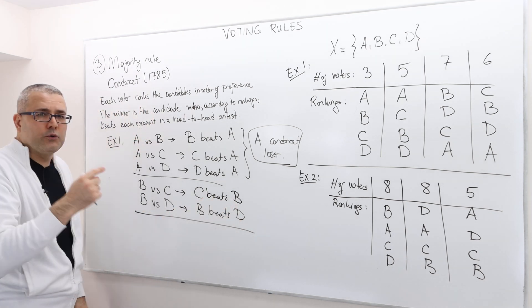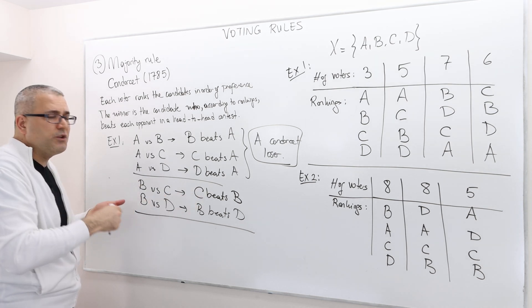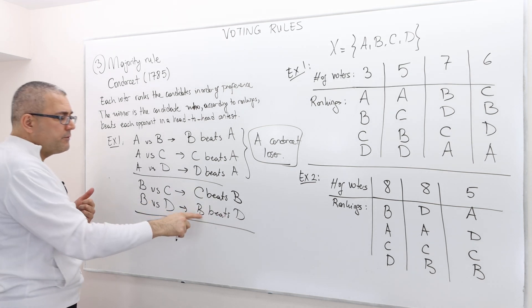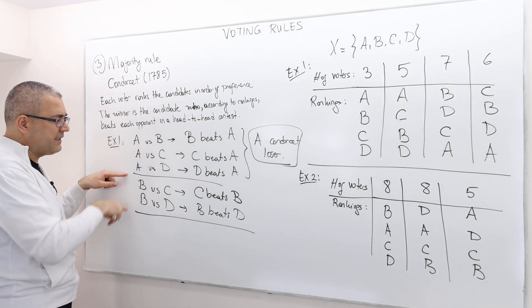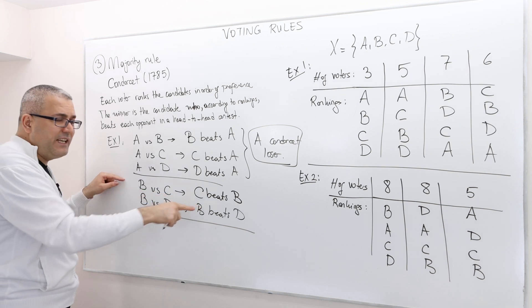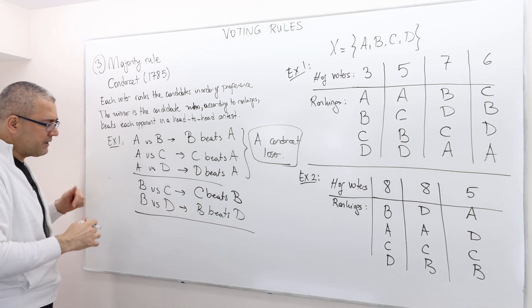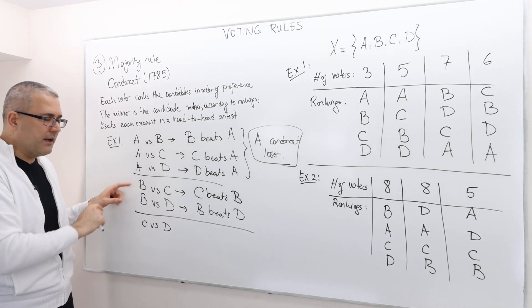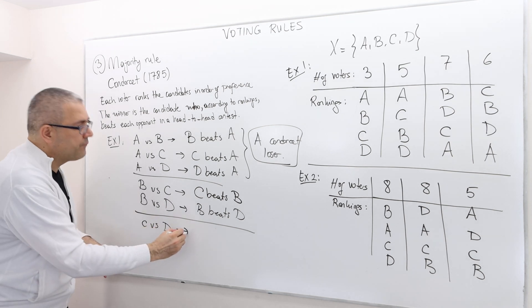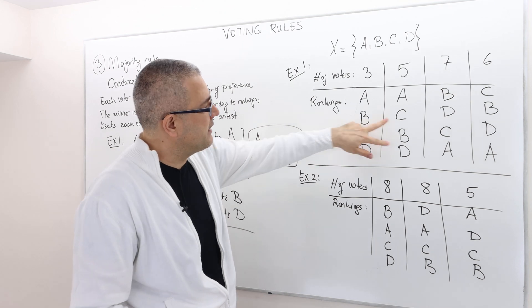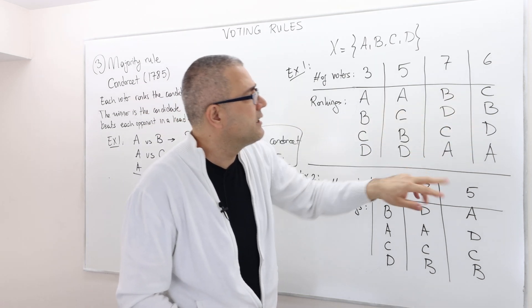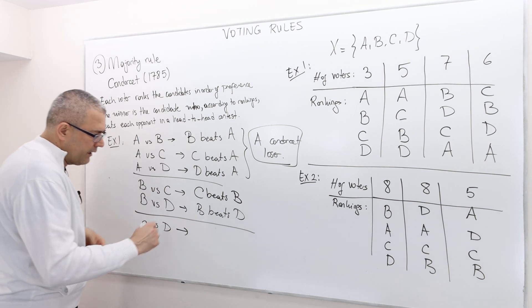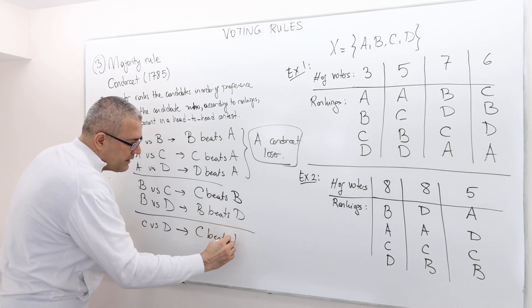D is not a Condorcet winner because B beats D. So I have a guess that C is going to be the Condorcet winner. Let's confirm with C versus D. Looking at C and D: only seven people prefer D over C, so the majority prefer C over D. Therefore C beats D.